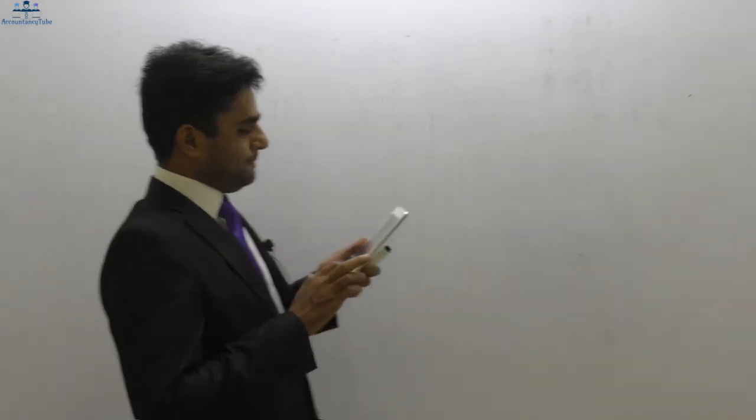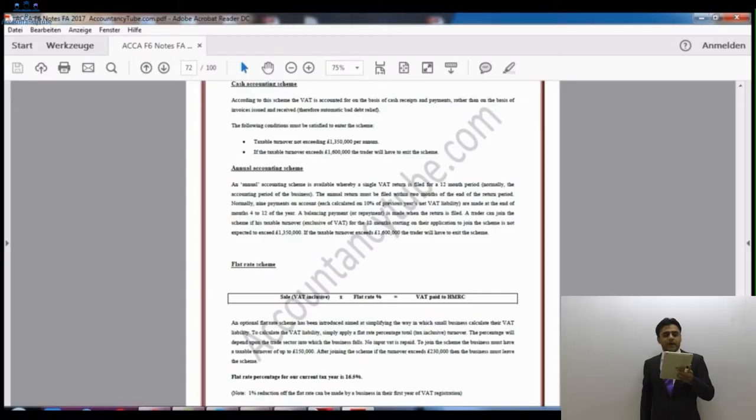For taxation purposes within the UK, there are three different schemes available to taxpayers, and they can choose any of these schemes subject to qualifying for them. There are certain conditions, and if they qualify, they can use these schemes. The first of which is the cash accounting scheme. VAT special schemes — the first one is the cash accounting scheme.